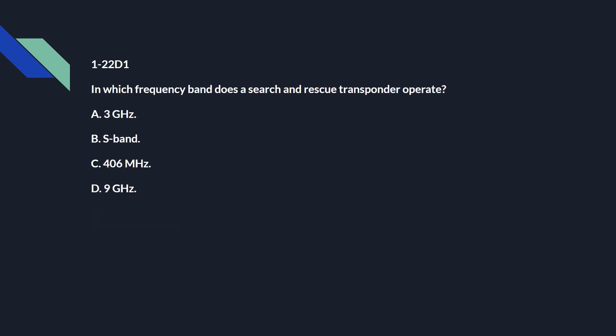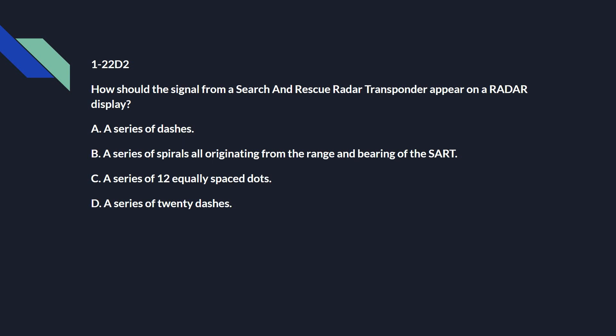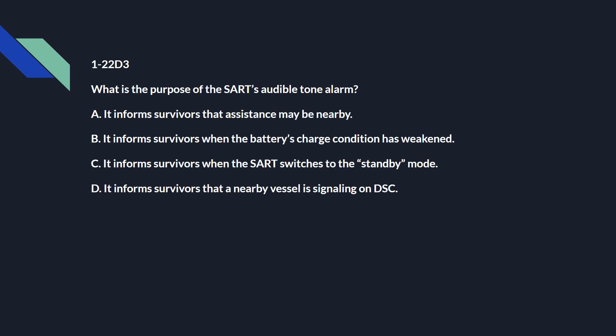1-22 Delta 1: In which frequency band does a search and rescue transponder operate? And that is D: 9 GHz. 1-22 Delta 2: How should the signal from a search and rescue radar transponder appear on a radar display? C: a series of 12 equally spaced dots. 1-22 Delta 3: What is the purpose of a SART audible tone alert? A: it informs survivors that assistance may be nearby.